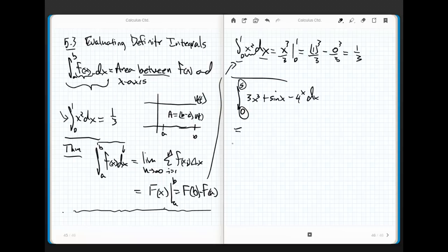According to this, it says take the antiderivative. The antiderivative of 3x cubed is 3 fourths x to the fourth minus cosine x, because the derivative of cosine x is negative sine x, so hopefully you see that. And then what was the antiderivative of a to the x? It was 4 to the x divided by the natural log of 4, right?